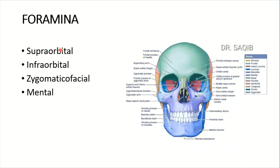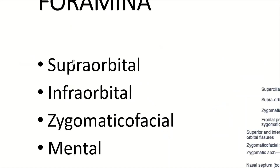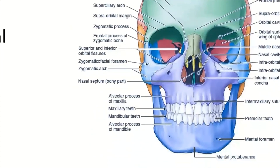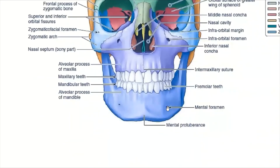Very important — four foramina are present in the Norma Frontalis: the supra-orbital, infra-orbital, zygomatico-facial, and the mental foramen. The supra-orbital foramen is here, and this is the infra-orbital foramen. This is the zygomatico-facial foramen, for the exit of the zygomatico-facial nerve and vessels. And lastly, the very important mental foramen for the mental nerve and vessels.